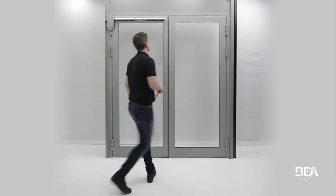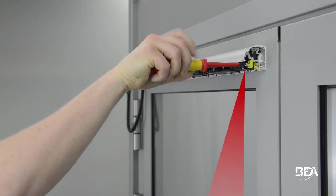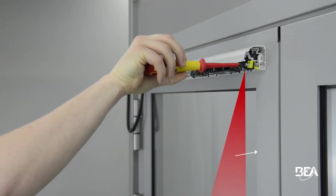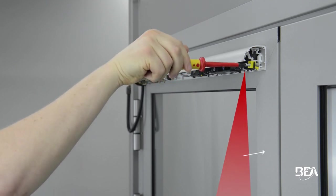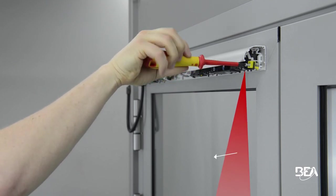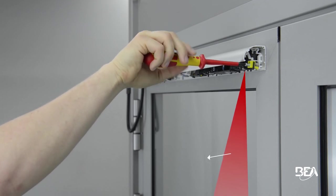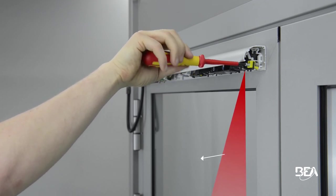If necessary, adjust the tilt angle of the sensor by turning the angle adjustment screw. By turning the screw clockwise, you move the detection field closer to the door. By turning the screw counter clockwise, you move the detection field away from the door.